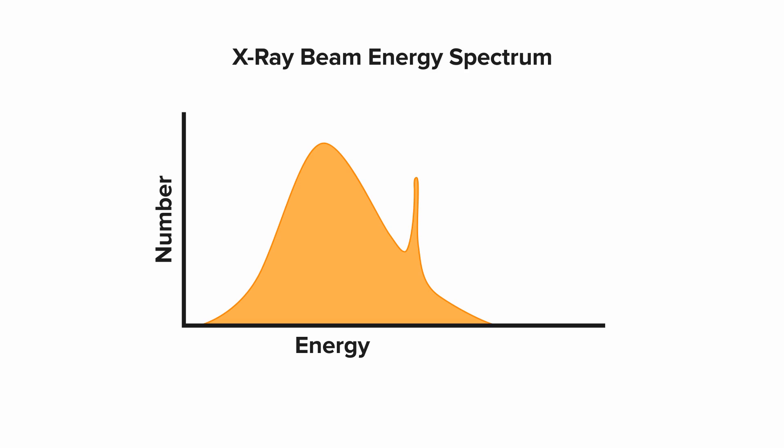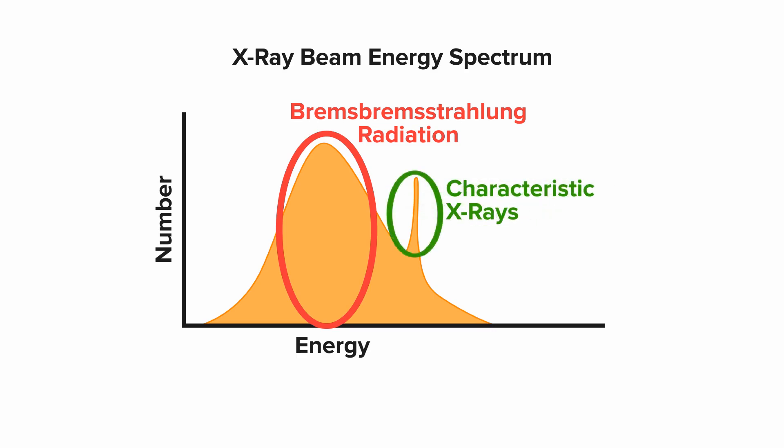So where did all of these photons come from? The large bell shape comes from a type of X-ray production that we call bremsstrahlung radiation. The single peak to the right comes from characteristic X-ray photons. These X-ray production processes are discussed in greater detail in other lessons.